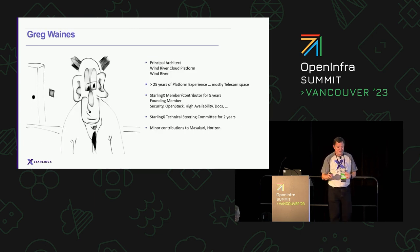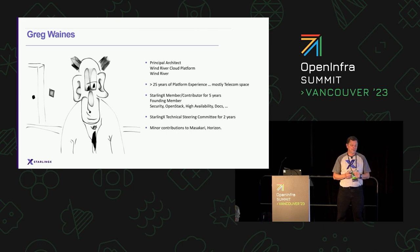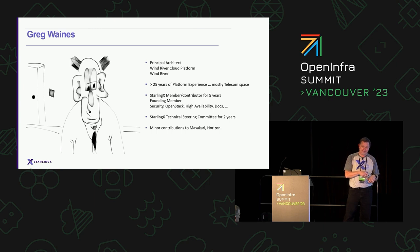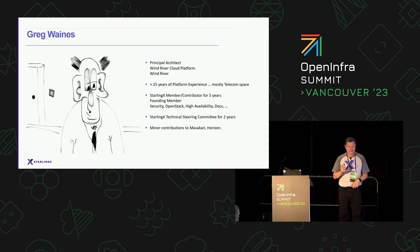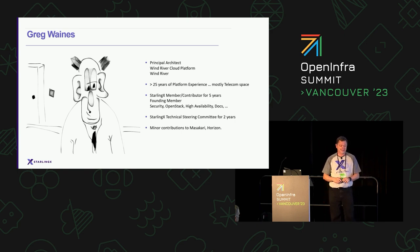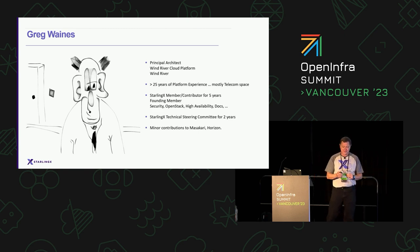I'm Greg Waynes, a principal architect at Wind River for the Wind River Cloud Platform — that's the commercial version of StarlingX. I've got 25 years of platform experience dating back to Nortel days, mostly in the telecom space. I'm a founding member of StarlingX — I was here in 2018 when we announced it. I've worked in security, OpenStack, high availability, software management, and docs, and for the last couple of years I've been on the technical steering committee for StarlingX.